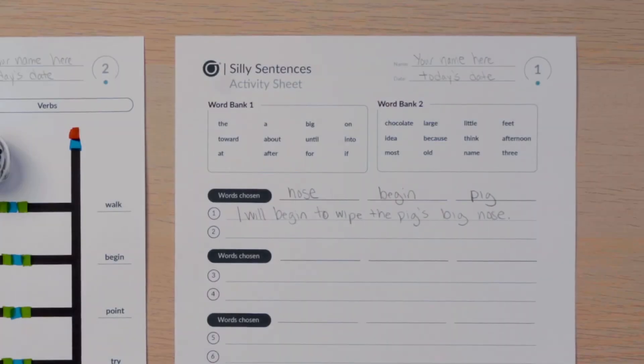There's another line, line two, for another sentence. You will use the words your Ozobot chose and the words from both word bank one and word bank two to create a longer, more descriptive sentence.